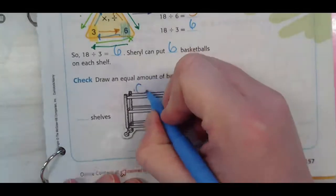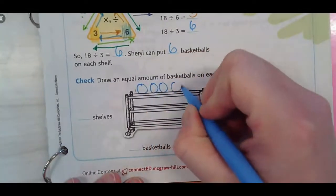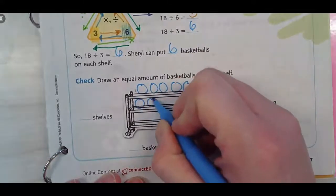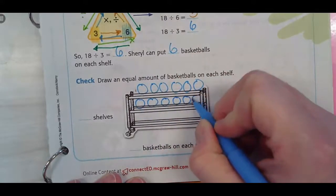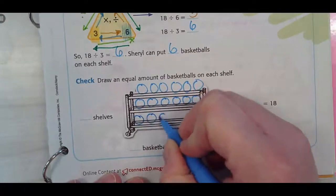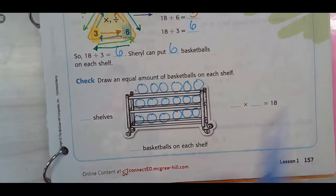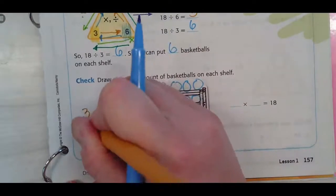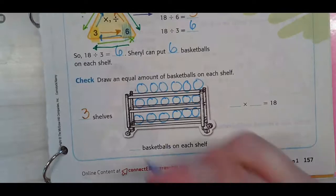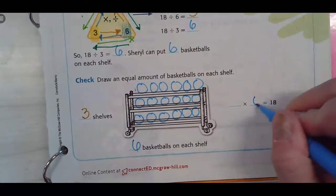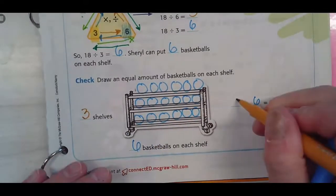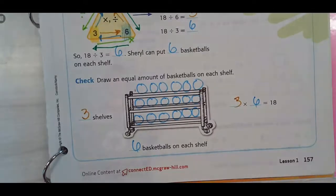1, 2, 3, 4, 5, 6. 1, 2, 3, 4, 5, 6. 1, 2, 3, 4, 5, 6. 3 shelves. 6 basketballs. 3 times 6 equals 18. Any questions for me? Easy, cheesy, lemon, squeezy? Yeah, that was hard, definitely. Turn the page.